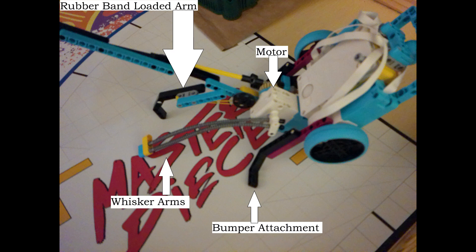If I did not have the rubber band-loaded arm, there would actually be too much weight for these whiskers to have to pick up, and the robot would not be able to get up.